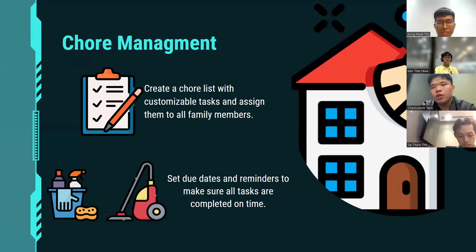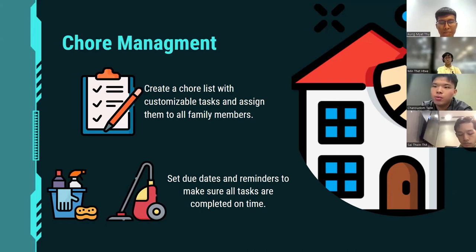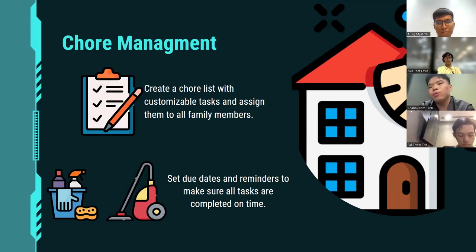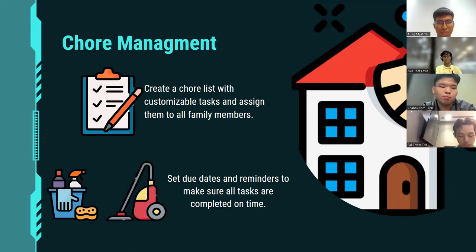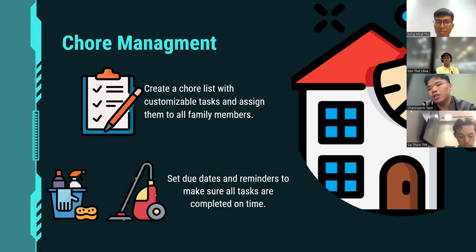Our first feature in household management is chores management. You can create a chore list with customizable tasks and assign them to all family members. All you need to do is input your family members and assign tasks to all of them. The app will create a list of chores that need to be done, including a deadline or due date. You can also set due date reminders to make sure all tasks are completed on time.